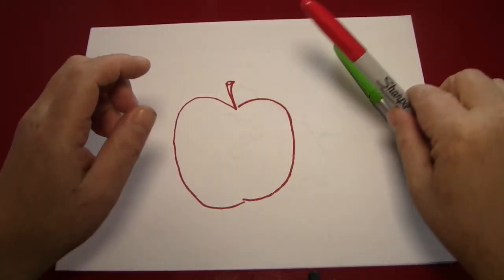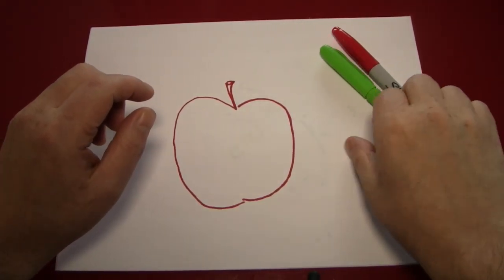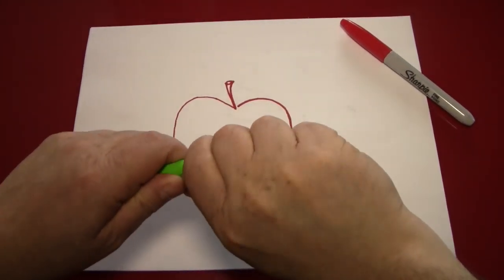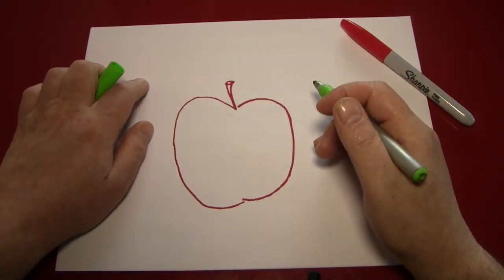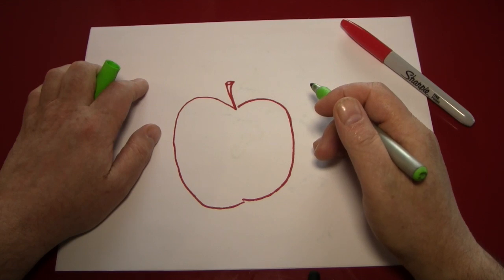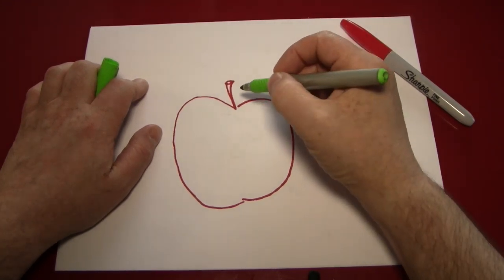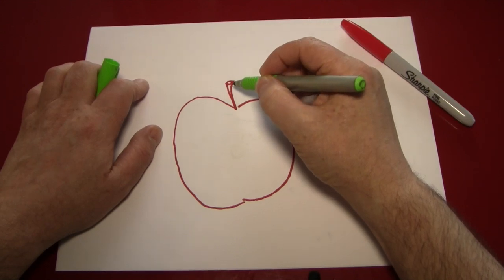Next, we'll put down our red pen, and get ready to draw a leaf. Now we drew these in our last project, when we were drawing the flower. And we're going to draw this one the same way.